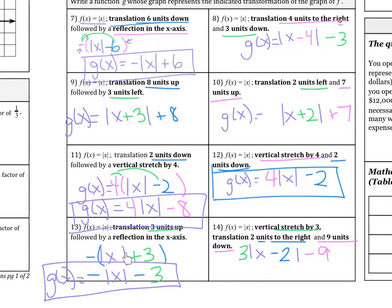Number 13, translation 3 units up, so we moved it up 3. Then we have to reflect it in the x-axis. Therefore, we have to multiply by the negative and then distribute to the front and back. So notice that's what it is here.